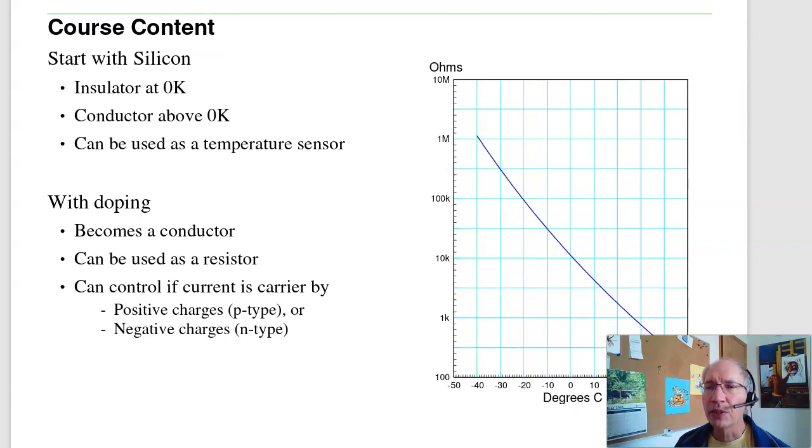Now, the course content. What we're going to be doing is starting out with just silicon. Silicon is an insulator at zero degrees Kelvin, and it conducts above zero degrees Kelvin. What that means is I can build a temperature sensor. If I measure the resistance of silicon, I can tell you what the temperature is.